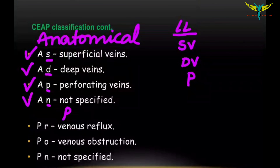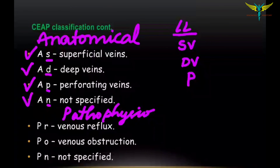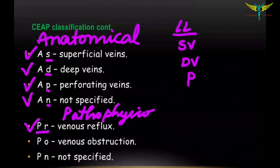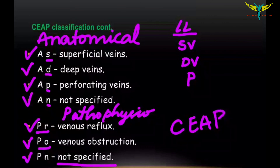Coming to the pathophysiological classification: the pathophysiology of venous insufficiency can be due to defective venous reflux, that is PR. It can also be due to venous obstruction, that is PO, and the non-specified variety. So this is the CEAP classification. If you like this video, do subscribe to my channel.